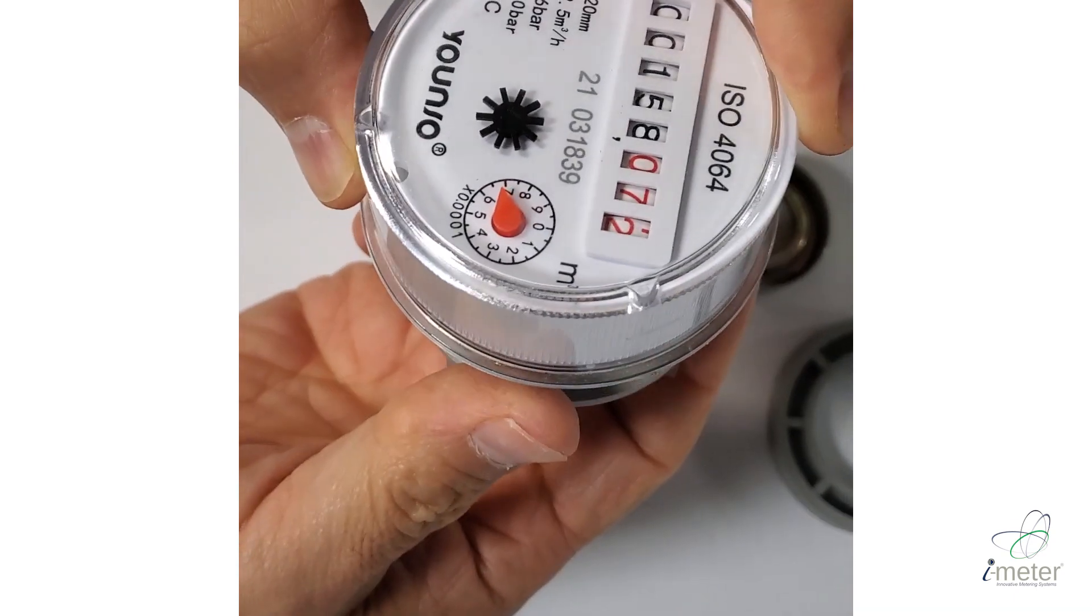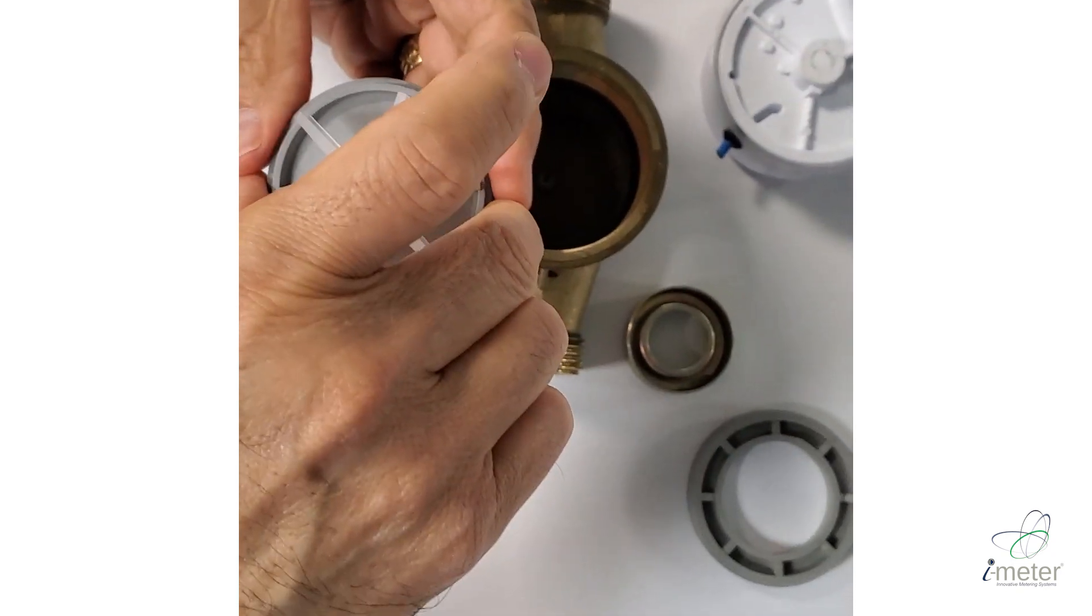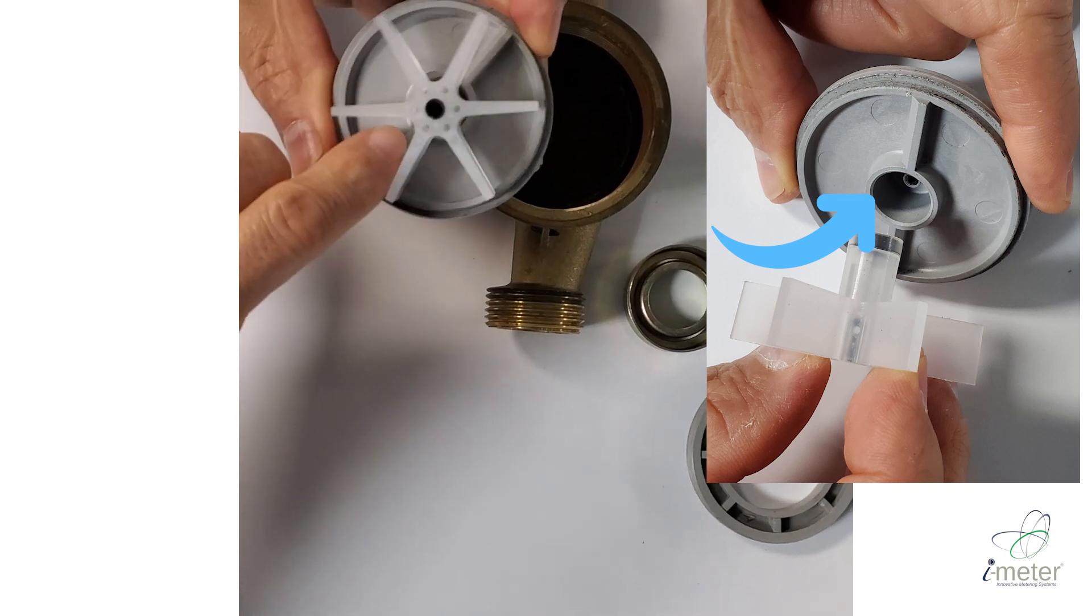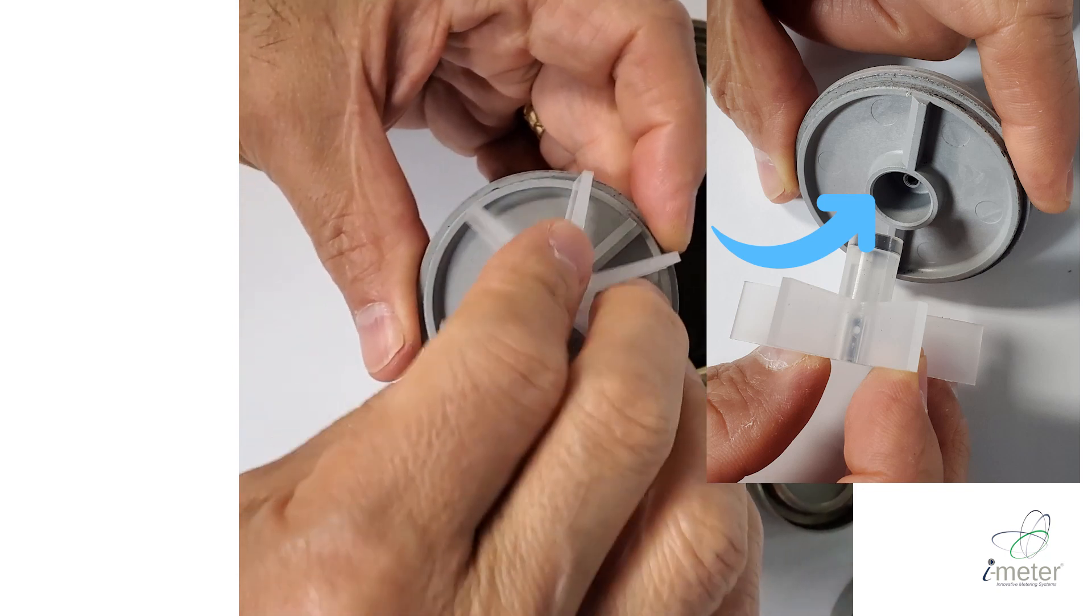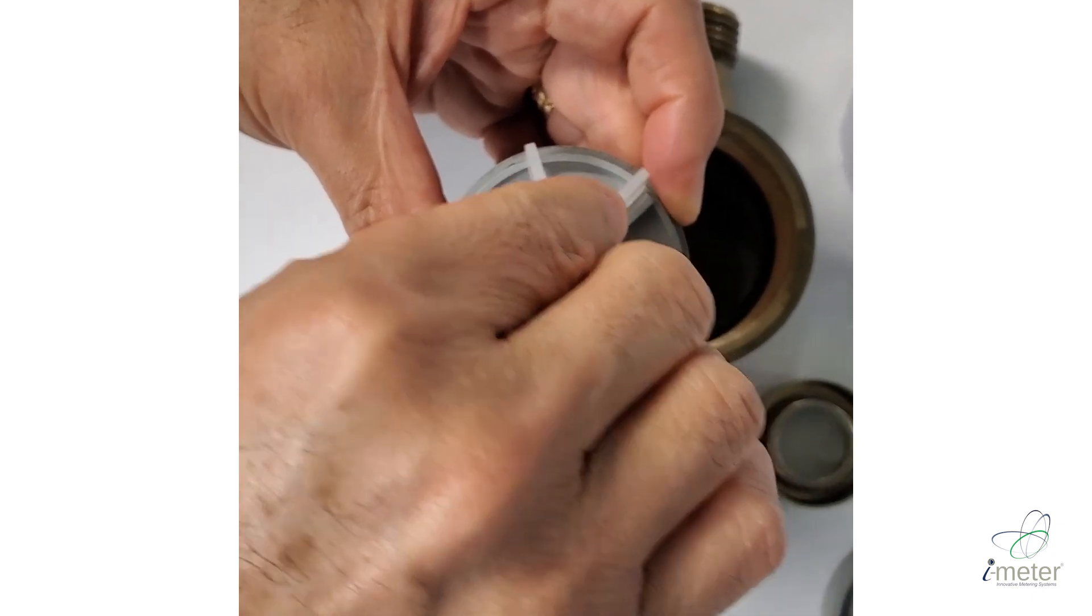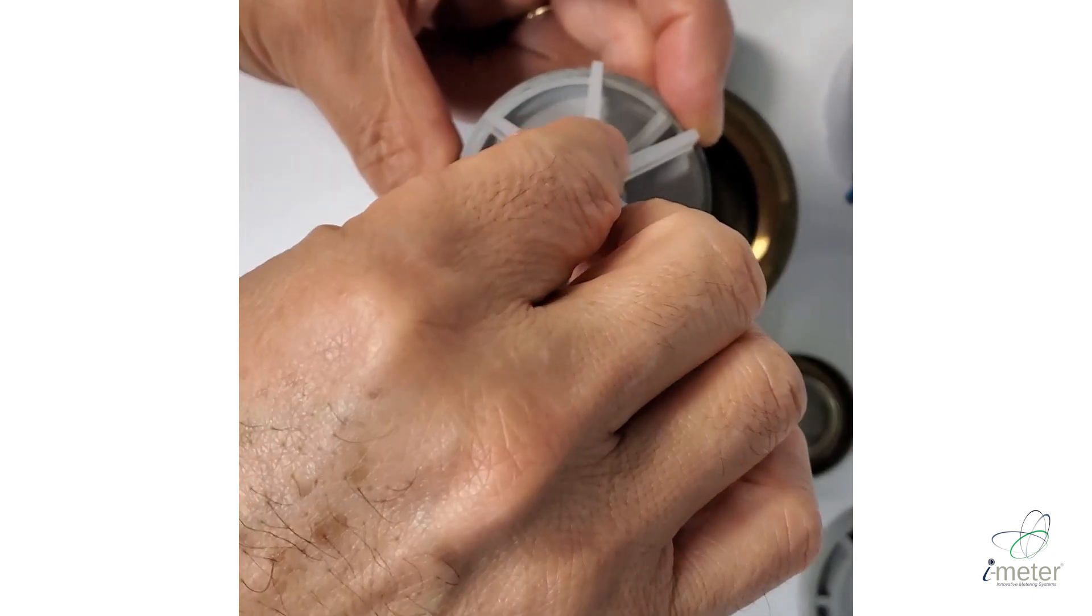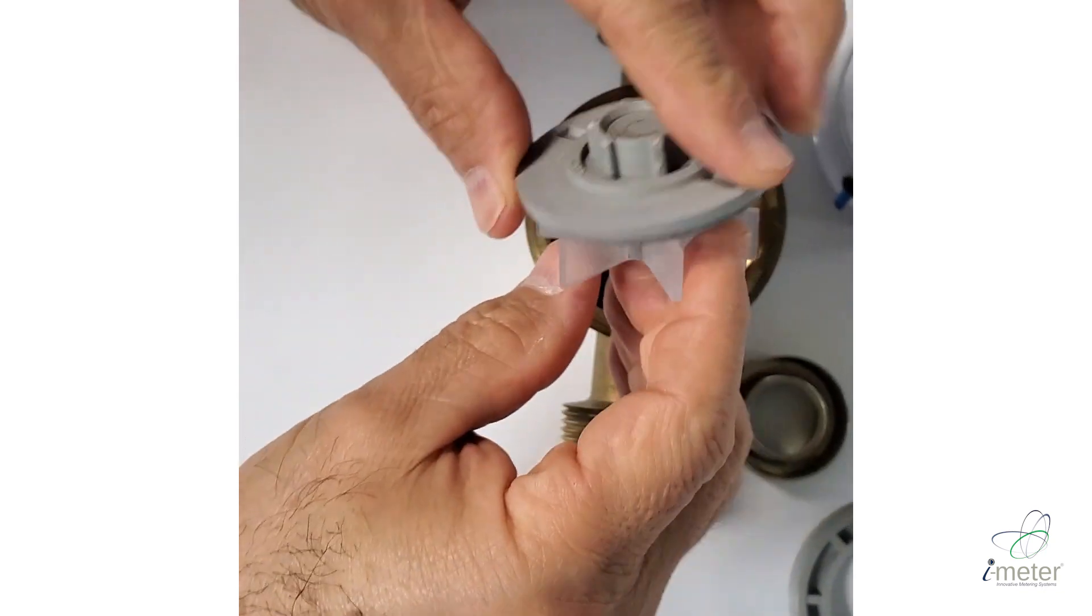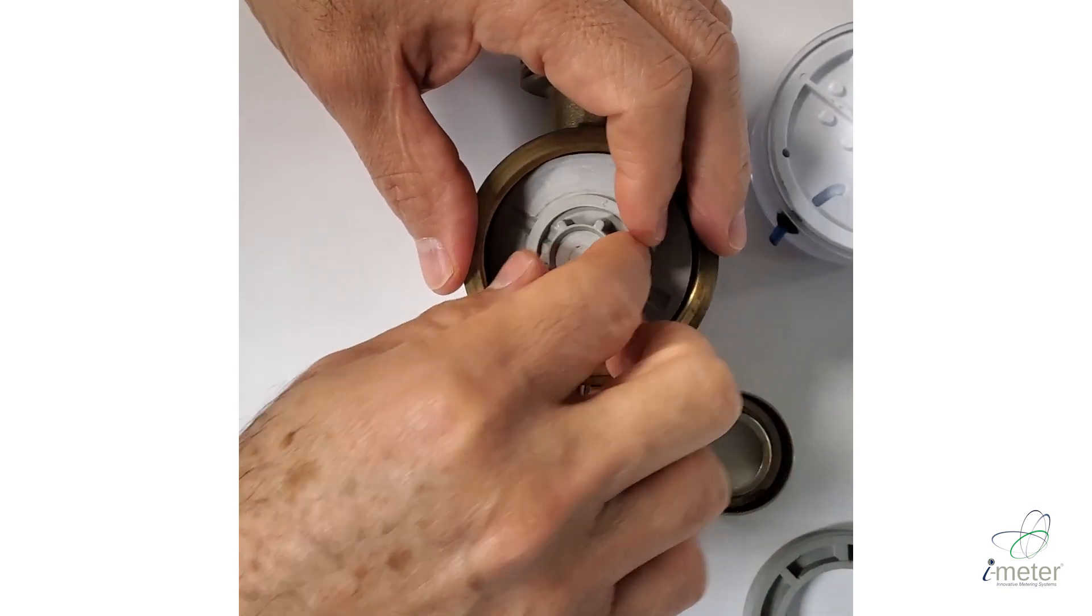Now what happens is if the meter were to be placed upside down, all the water debris and the dirt that comes with the meter would fill up this cavity and lock the turbine. And the meter over time will lose its accuracy. So that is the reason why all the meters have to be always placed right side up.